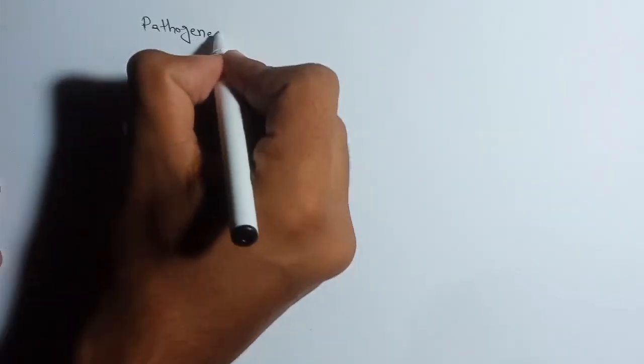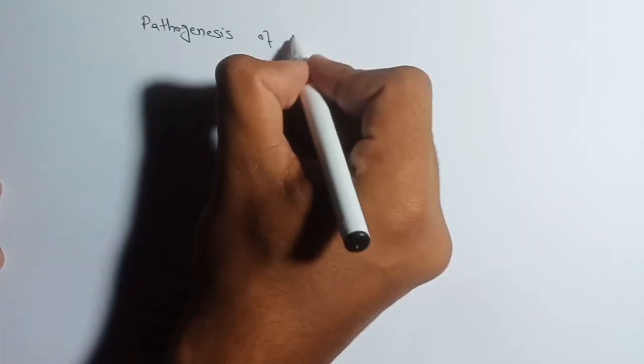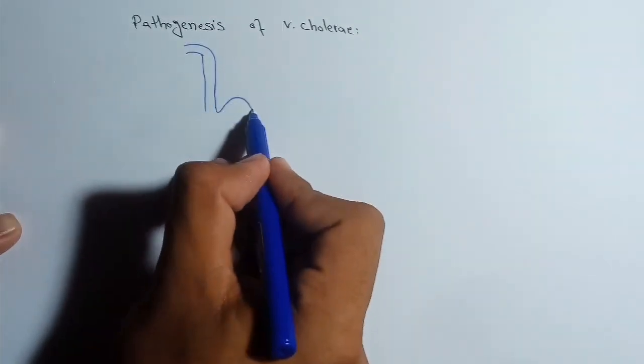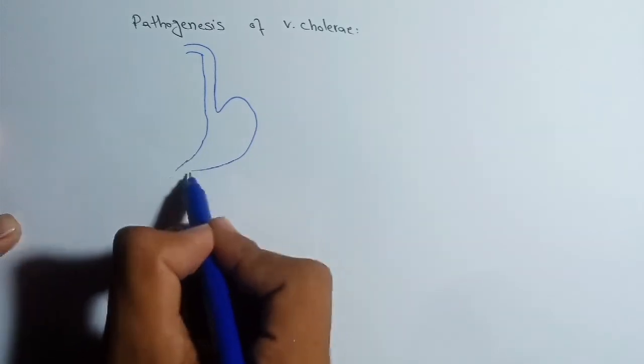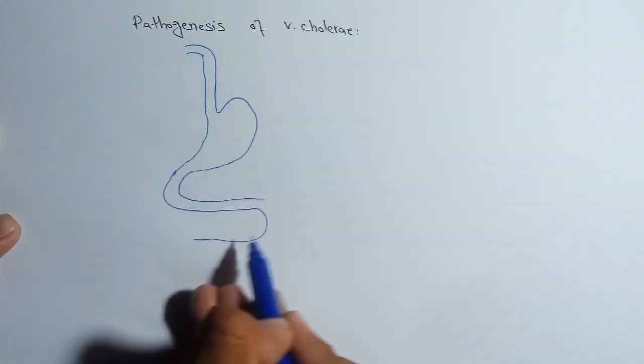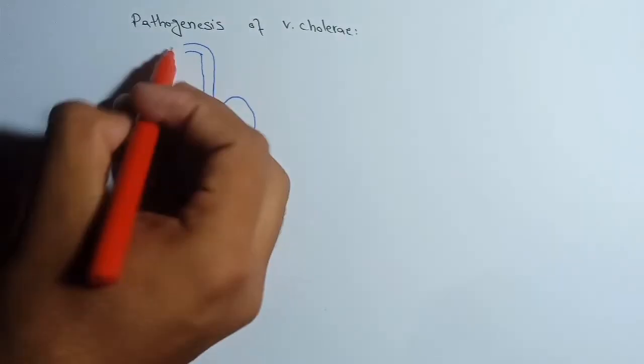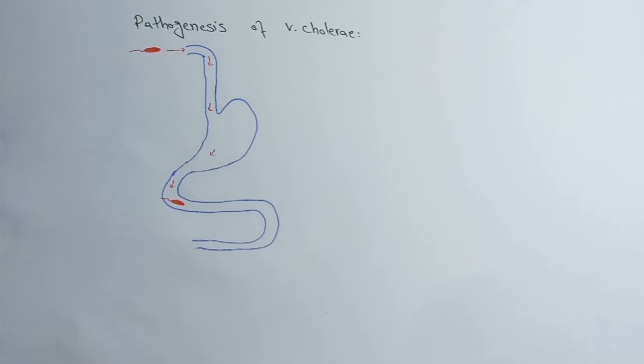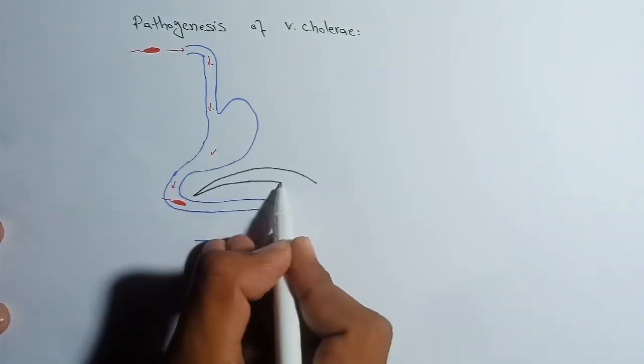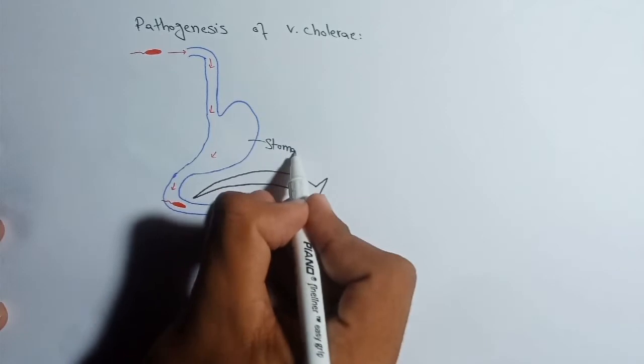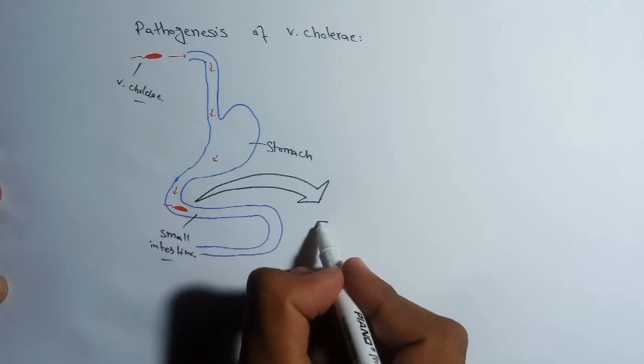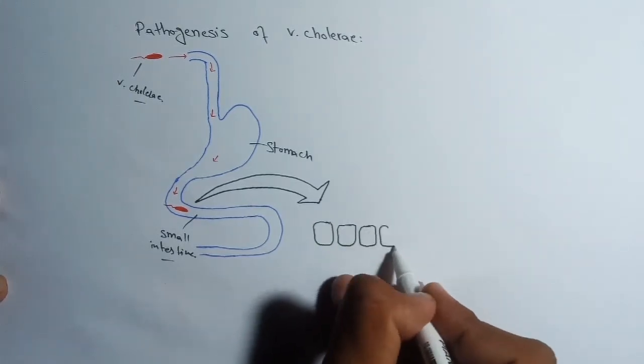Now let's move forward to the pathogenesis of Vibrio cholerae—actually how Vibrio cholerae causes cholera. Here we have the stomach and then intestine. The place at which Vibrio cholerae acts is the small intestine. Bacteria enters from the mouth and then into the stomach, and if gastric pH is not enough to kill the bacteria, then it will move into the small intestine where it actually acts.